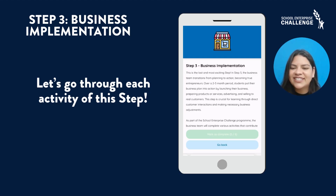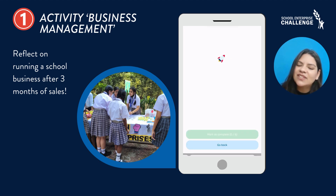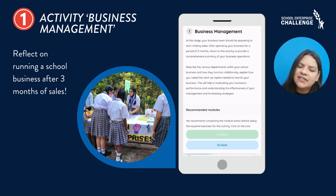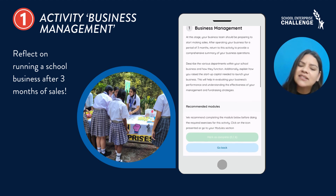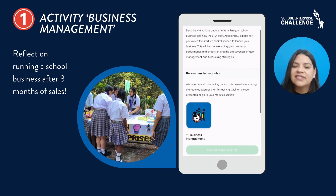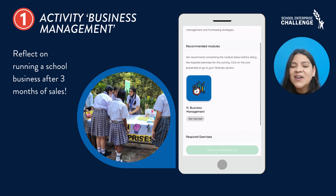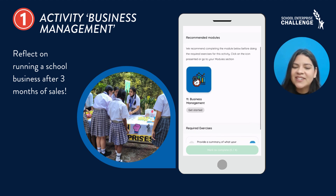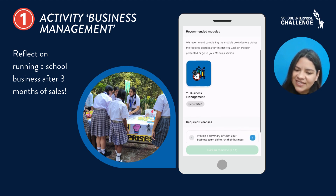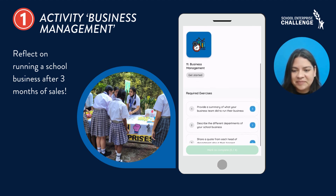So let's go through each activity of step 3. Activity 1: Business Management. To start off this final step, you must look back at all you have learned and summarize the key points when running your own school business. We recommend you come back to this activity after running your business for a while.